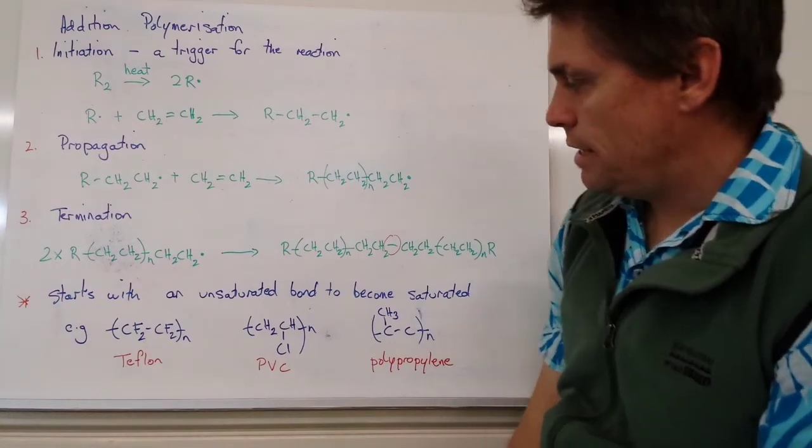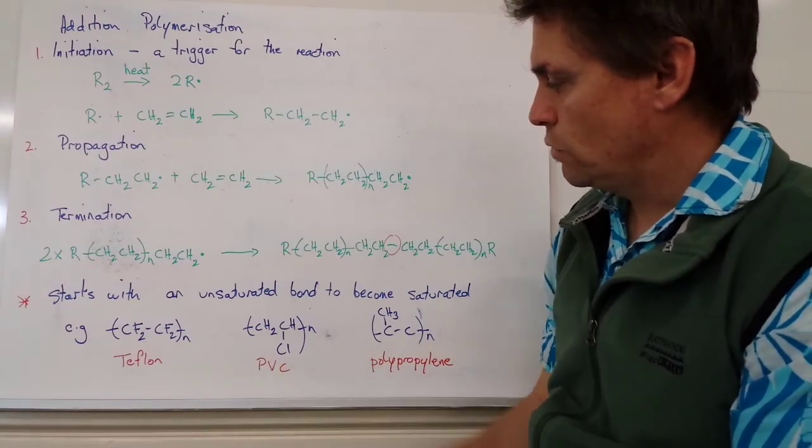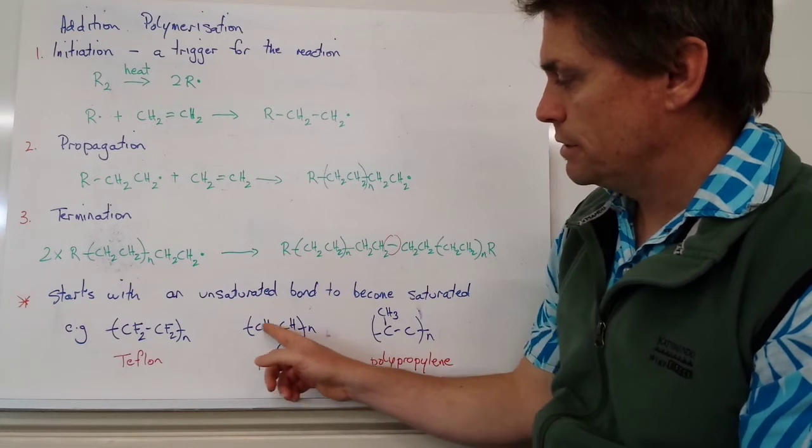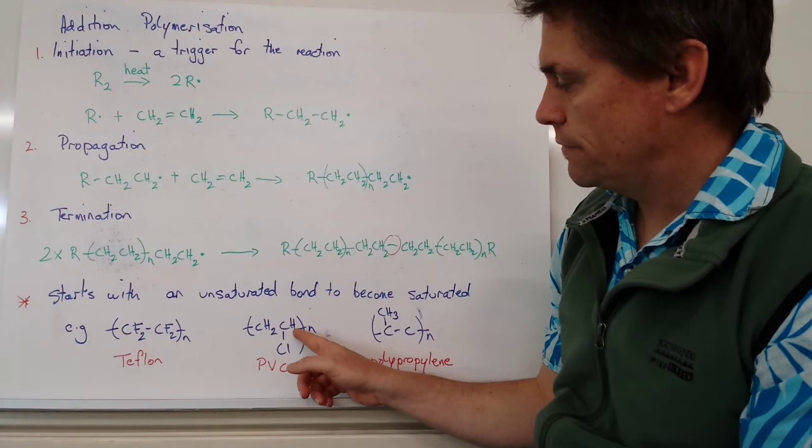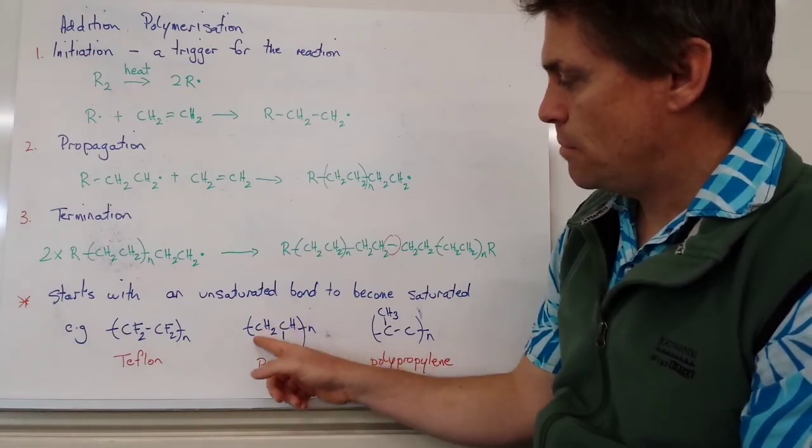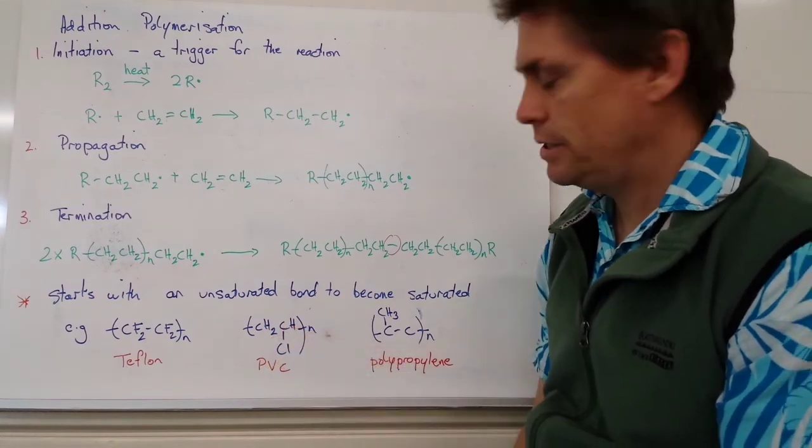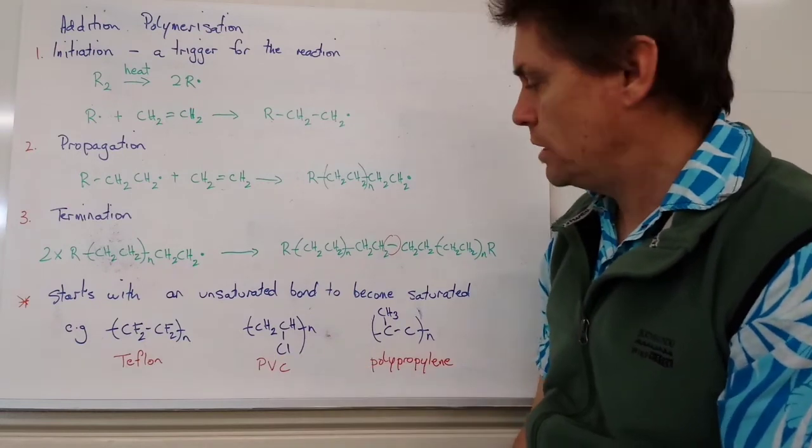We've also got another quite common molecule, polyvinyl chloride. So our vinyl molecule will be a double bonded carbon to carbon. Instead of having two hydrogens off this second carbon, we substitute for one chlorine. And our monomer unit is our CH2CHCl unit. And if we polymerize that, we form polyvinyl chloride.